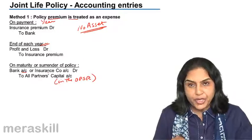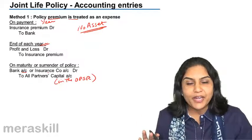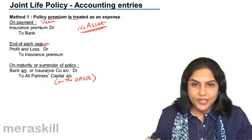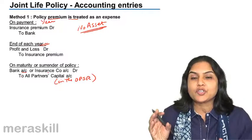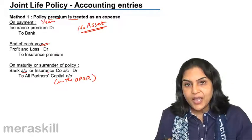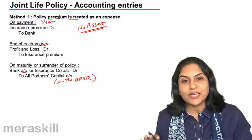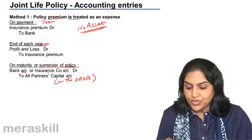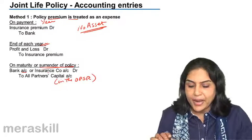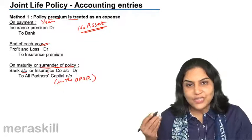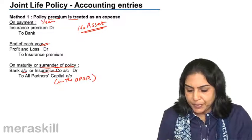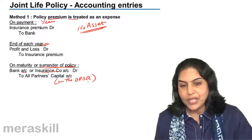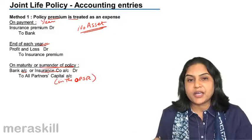Maturity occurs either on the death of the partner or on the expiry of a period. If we do this in between — say, for example, a partner retires — the policy is then surrendered because we need the money. The money received may be used to settle the account of the retiring partner. When this money is received, only the surrender value of the policy is received: bank account debit, or if money is not yet received, insurance company account debit, to all partners' capital accounts in the old profit sharing ratio.